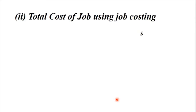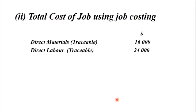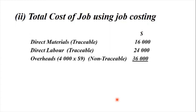Part 2 requires the total cost of the job using traditional costing. We have direct materials, which is traceable, $60,000. Direct labor, $24,000 — that too is traceable. And the overheads, non-traceable, we will allocate that using the rate we just calculated: 4,000 hours by $9 per machine hour equals $36,000. When we add it all together, we get a total cost of $120,000 for the job.